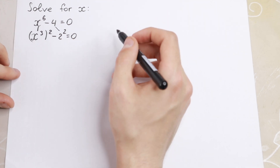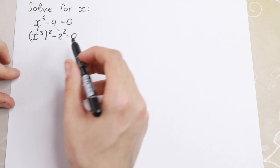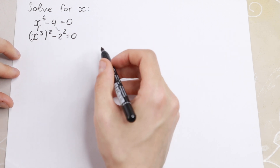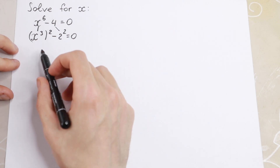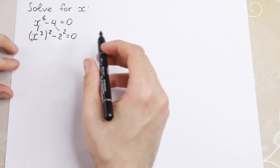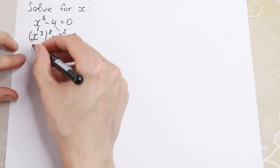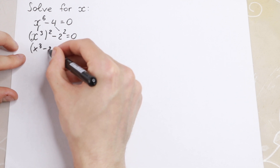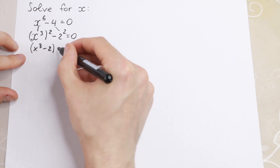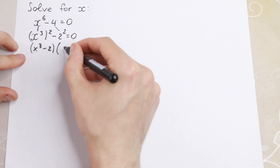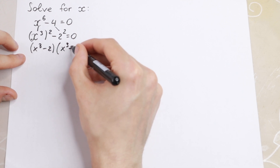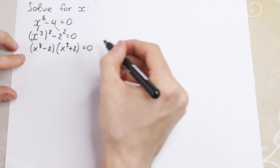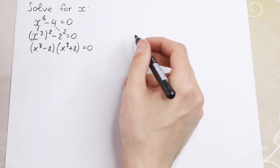What we are going to do in our case: we have a difference of two squares, so we can split it into the identity a minus b times a plus b. So we will have x cube minus 2, times x cube plus 2, equal to 0.